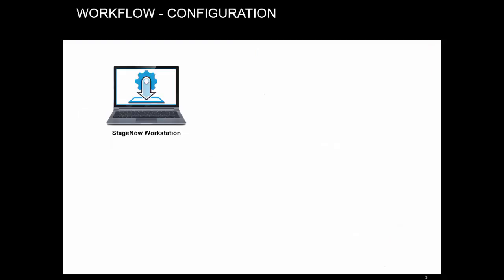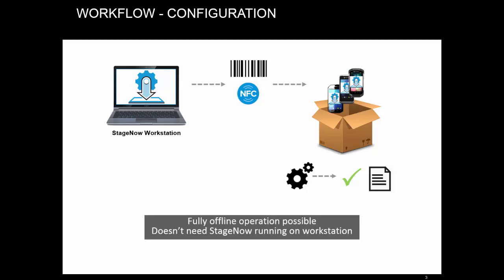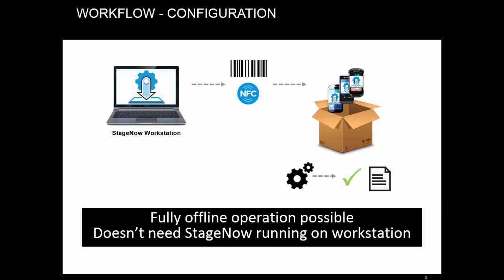Before moving on to deployment, let's quickly review the configuration workflow. When you push some simple and small settings, the size of the data is usually small enough to be directly encoded in the barcode or NFC tag. When you scan that, the Stage Now client decodes the data and performs necessary actions. This mode can fully work offline and is portable.